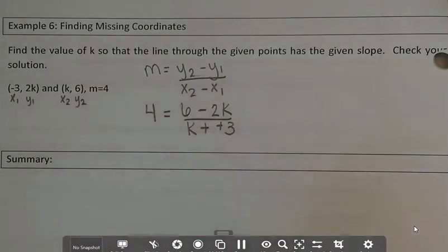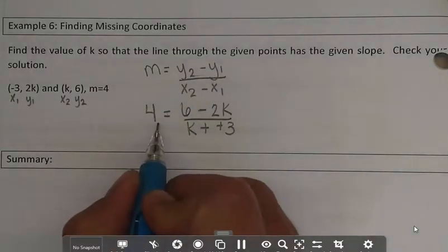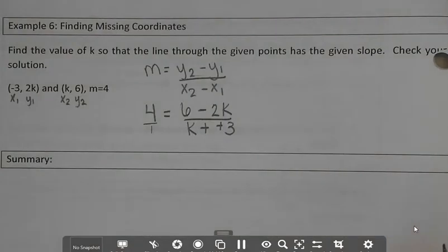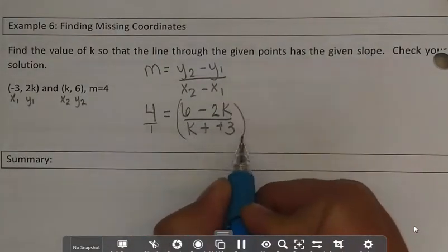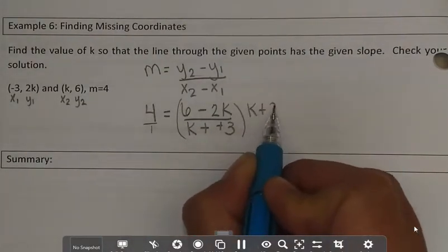So you can cross-multiply, which this is like 4 over 1. Or that's the same thing as basically multiplying both sides by this denominator, k plus 3.